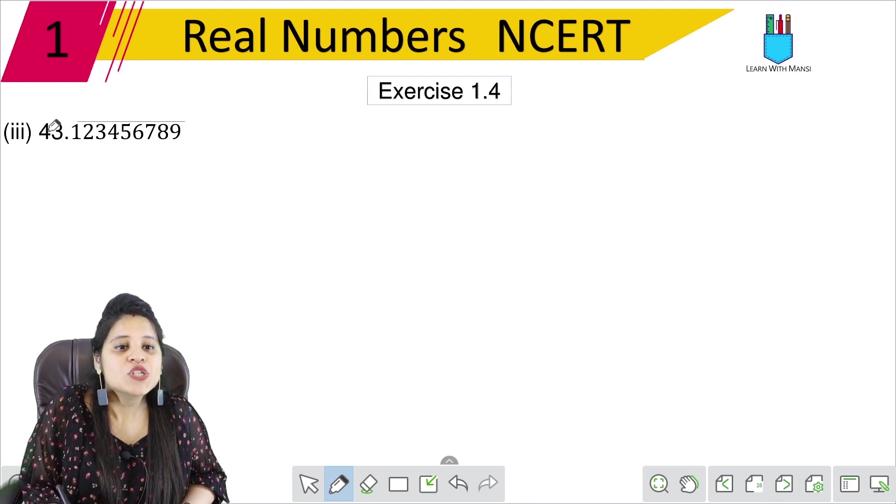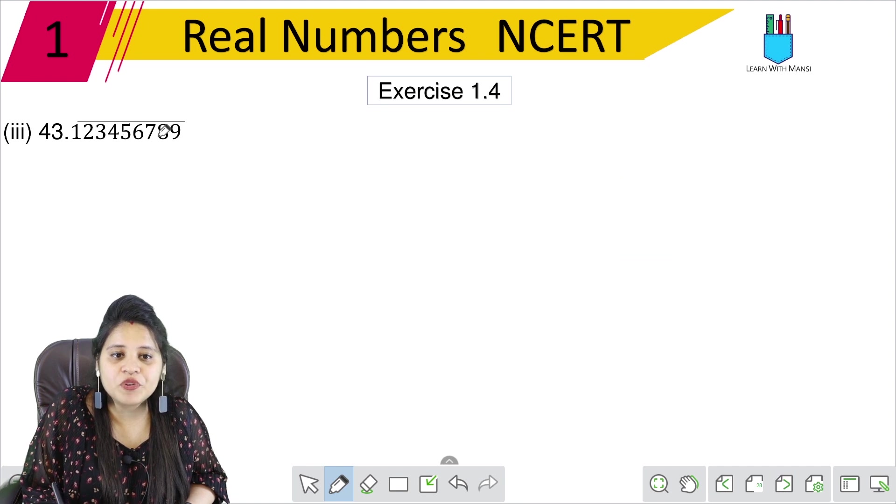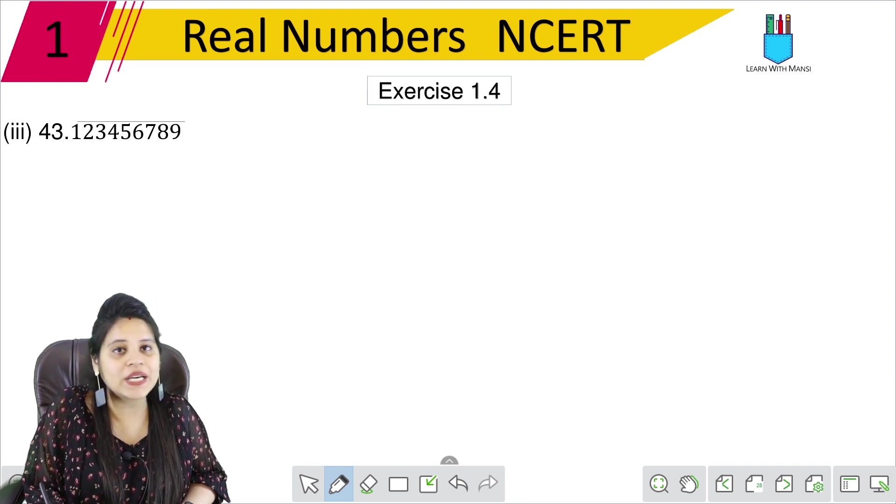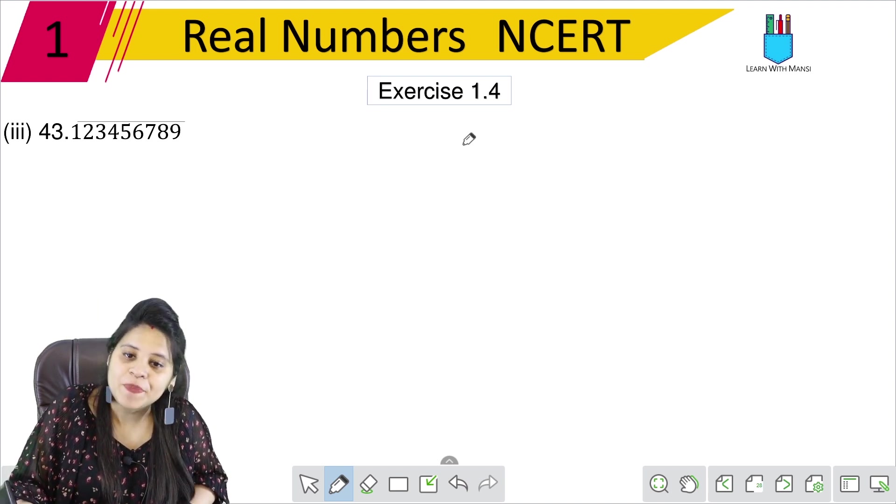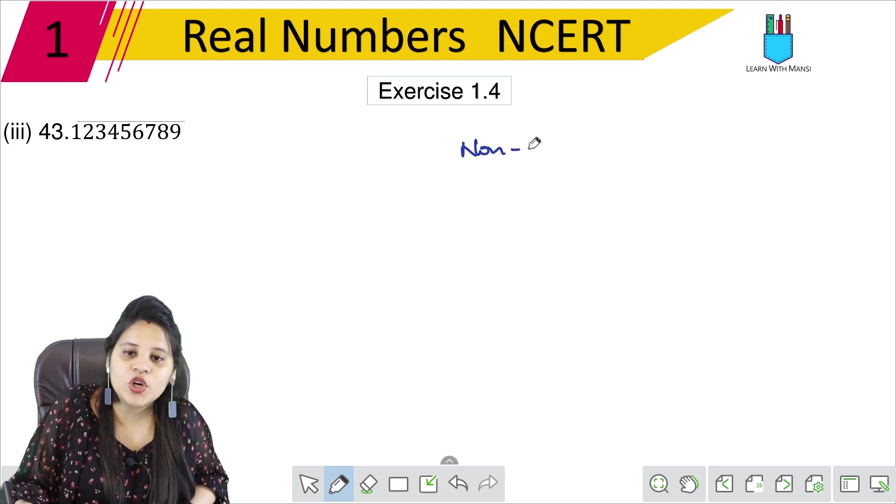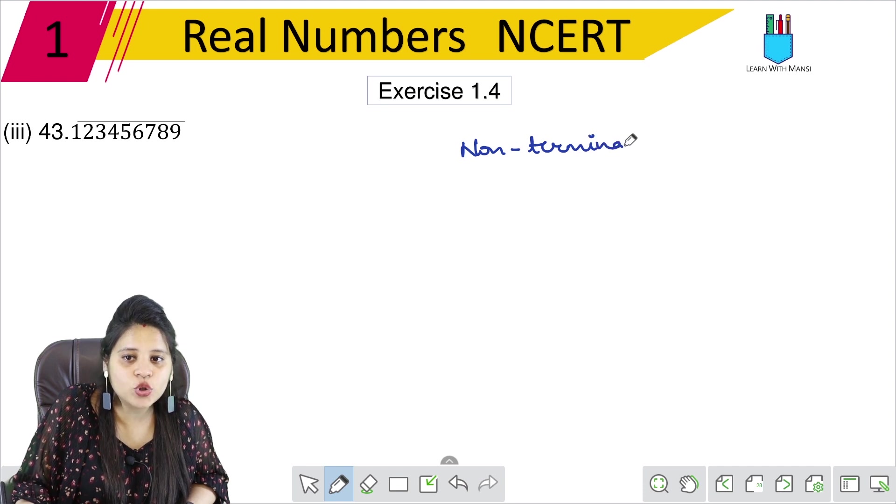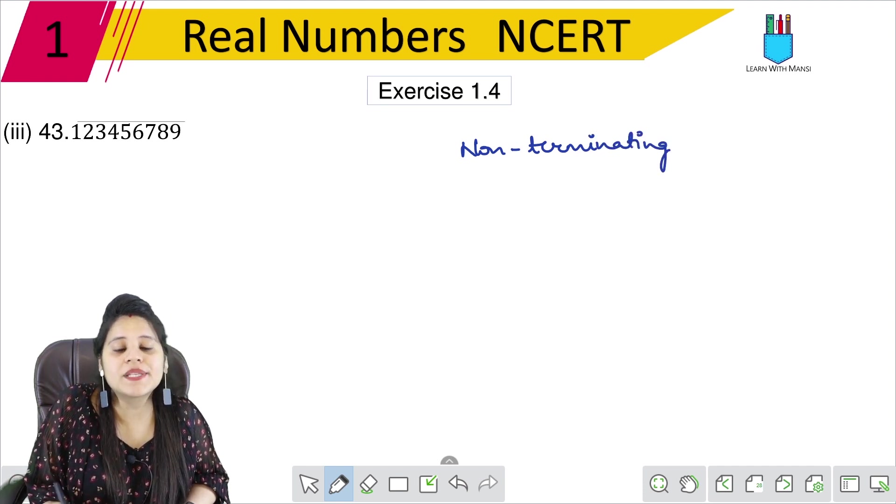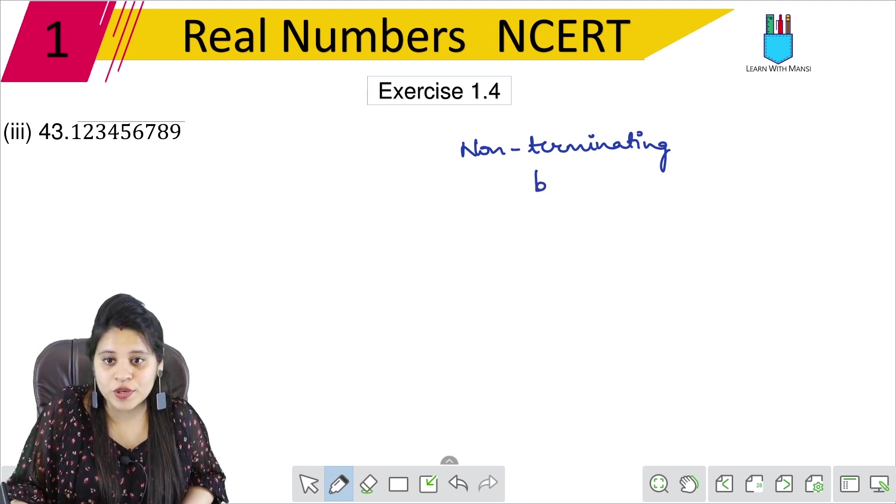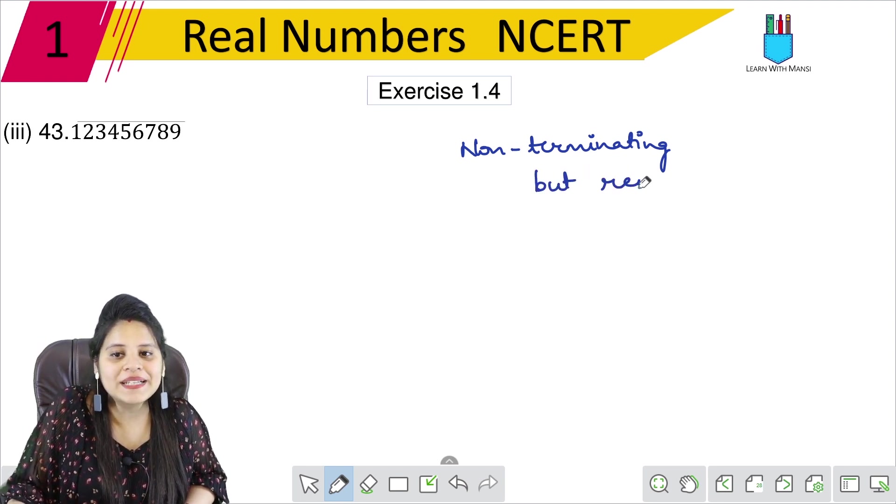Now in the third part, 43.123456789 with a bar over it. The bar means it will be repeated. So this is non-terminating, because it does not terminate. With non-terminating, this whole thing is repeated. So non-terminating but repeating.